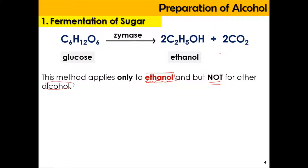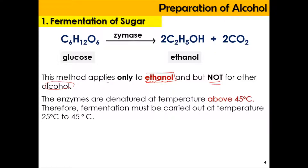Fermentation — in Malay, called penapaian — is popular in the making of kueh tapai or can be used in the production of wine. Since an enzyme catalyst is involved, there is an optimum temperature. If the temperature of the reaction goes above 45 degrees Celsius, the enzyme is going to be denatured, so it should be conducted at room temperature.